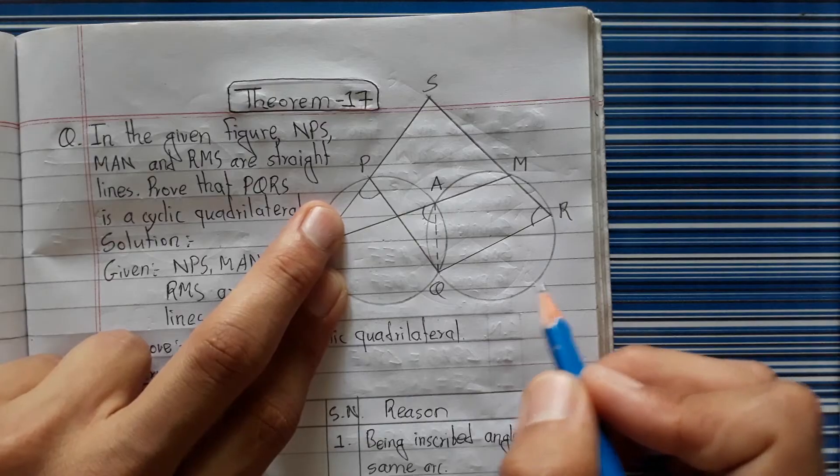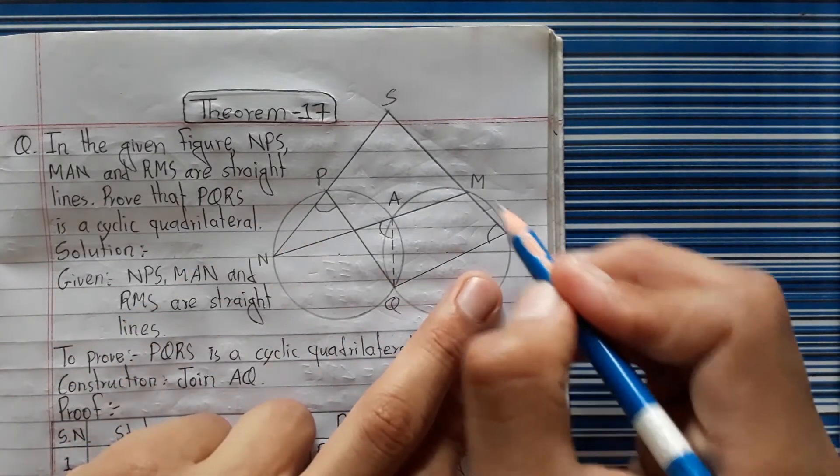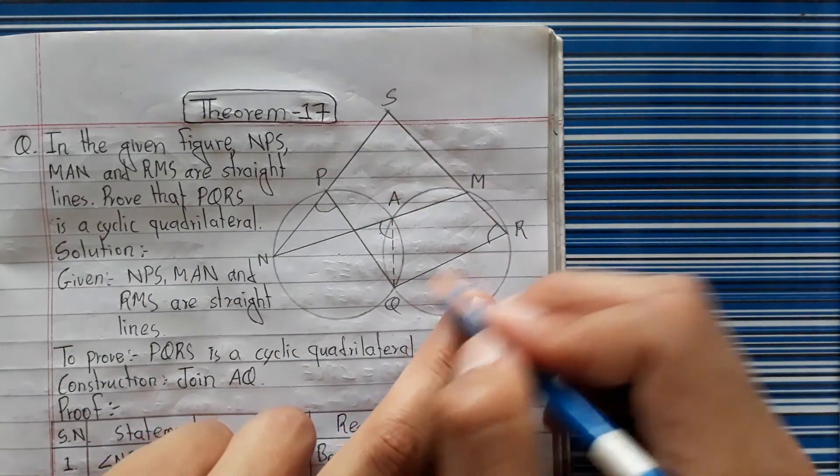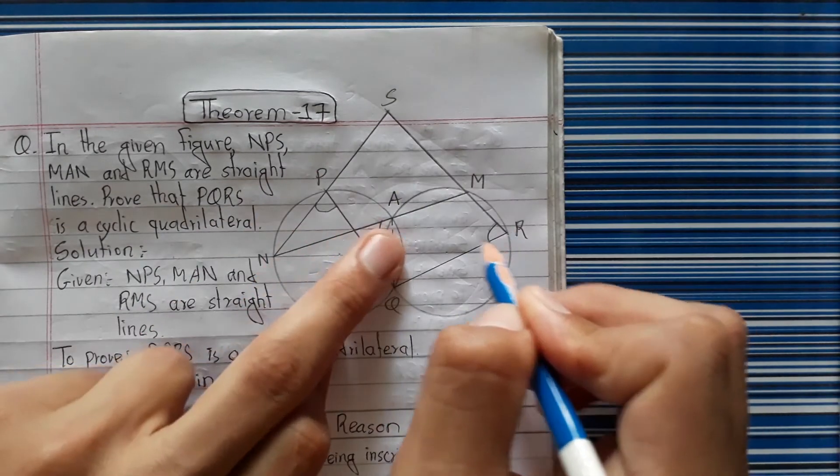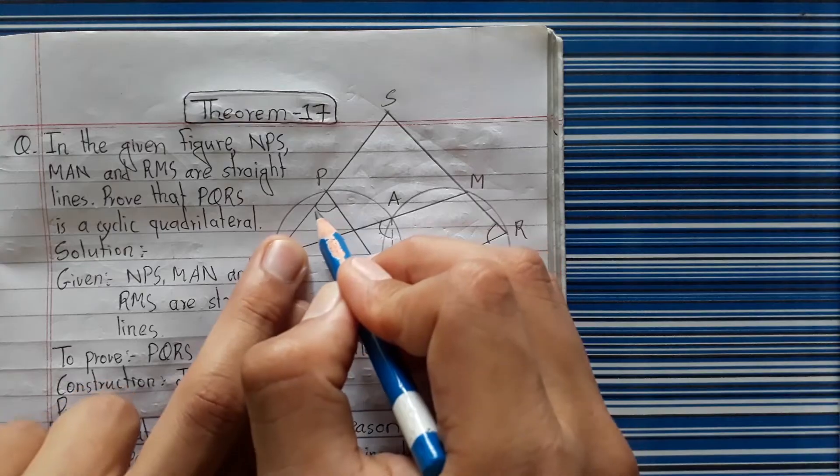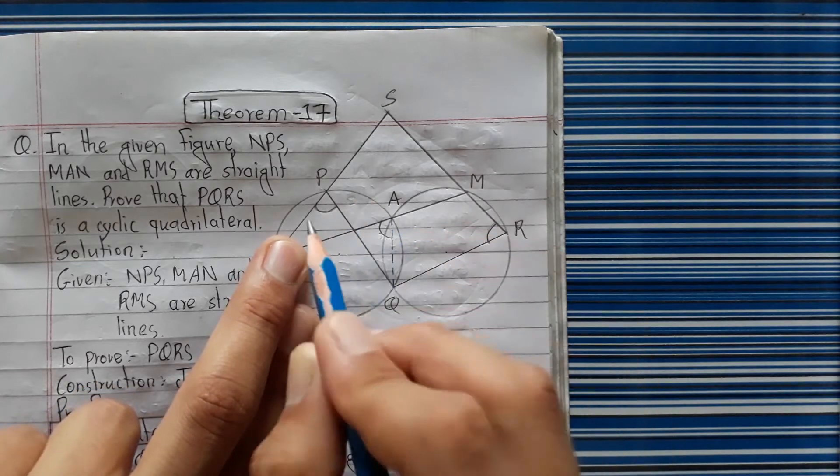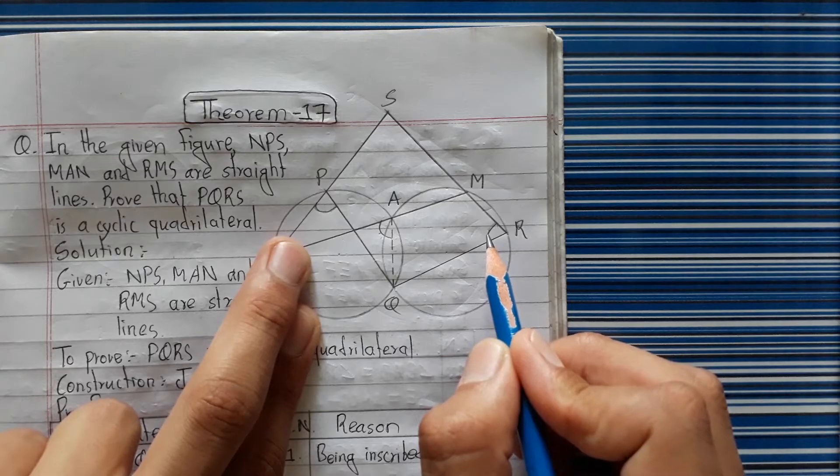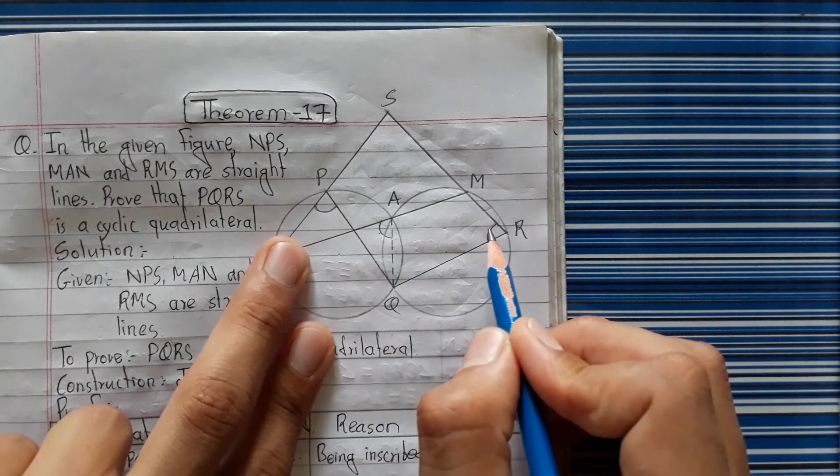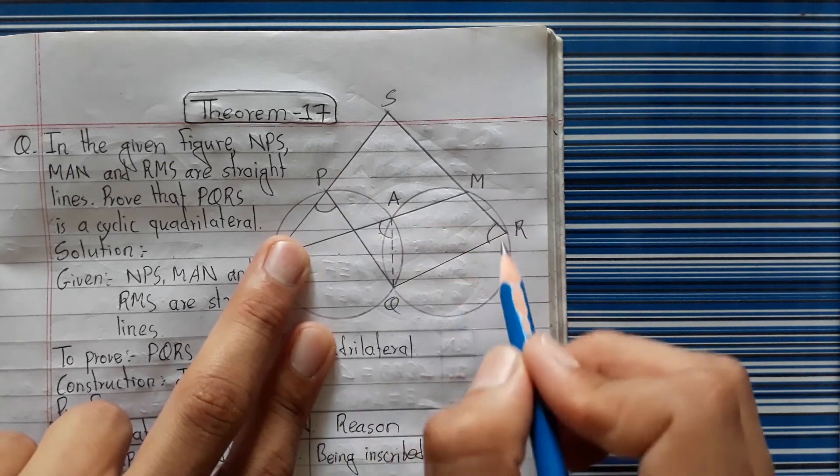The interior angle of the quadrilateral on your opposite side, and the exterior angle - your angle equals the sum. This shows the cyclic property.